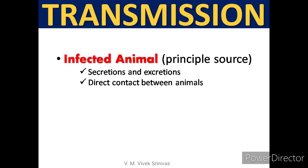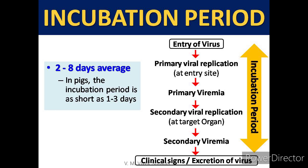Source of infection: Infected animals act as the principal source of this virus. Transmission is through secretions, fecal matter, and by direct contact between animals. Incubation period: On average 2 to 8 days from entry of the virus. In pigs, the incubation period is as short as 1 to 3 days, and pigs can also act as an amplifier host.